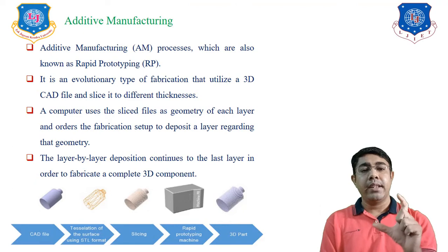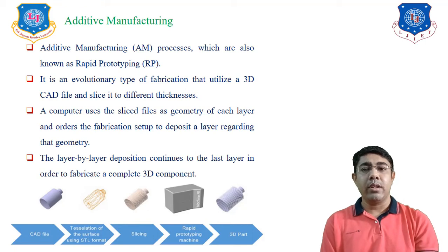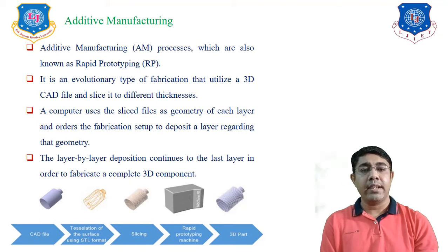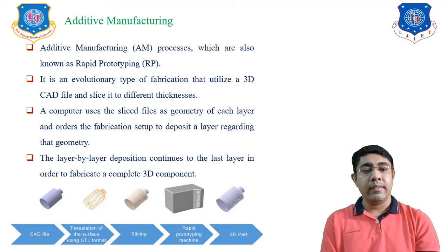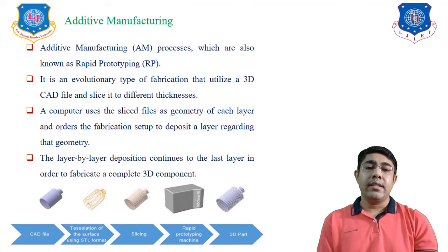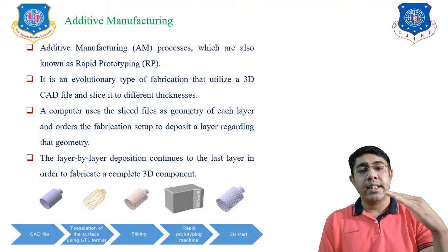Consider any component — you first slice that component to make the cross sections. These cross sections are used by the rapid prototyping machine to generate the cross-sectional area by adding material. Once the first layer is completed, the next layer is manufactured by adding materials. Then a third layer, and so on — first, second, third, fourth sections are generated by adding materials. This process continues until the end sections of the component are completed.